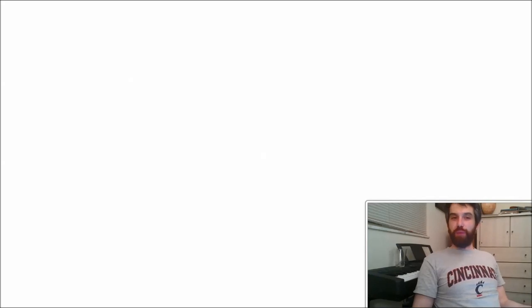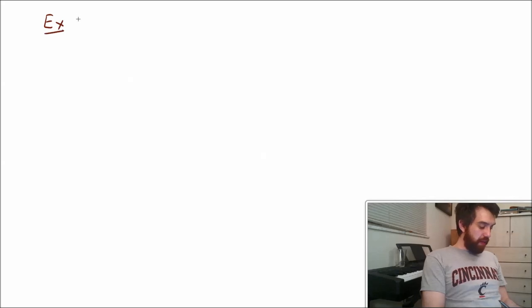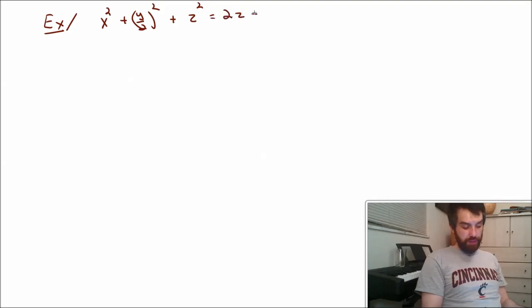The last example was the graph of a function, right? It was z was a function of x and y, but it might not always be that. I might be interested not in the graph of a function, but just of some other surface. So the second example I'm going to give is one of these. It's going to be x squared plus y divided by 2 squared plus z squared. And I'm going to make this equal to 2z plus 3. So some big equation.